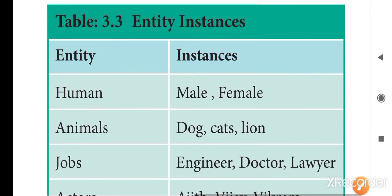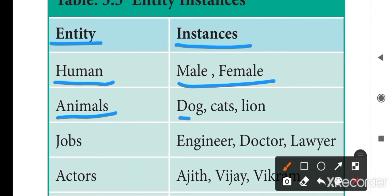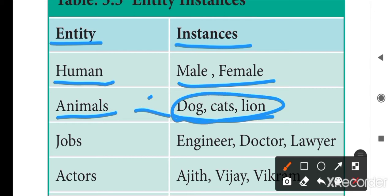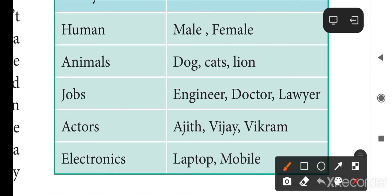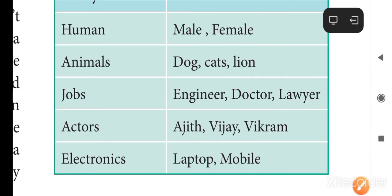Looking at the table: 'human' as an entity has instances male, female, or transgender. 'Animal' as an entity has instances dog, cat, lion. 'Job' as an entity has instances engineer, doctor, lawyer. These are the values of the entity — similarly for actors and electronics.